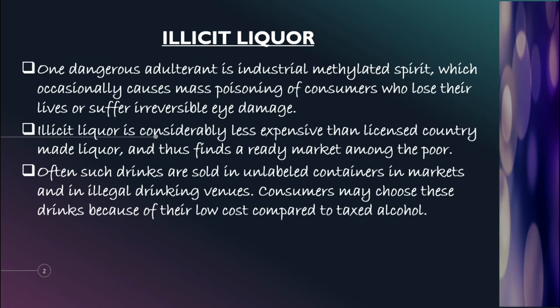Methanol is comparatively less expensive than ethanol, and hence the overall pricing of illicit liquor comes down. That is the reason why it finds a good market among poor people. Often such drinks are sold in unlabeled containers in markets and illegal drinking venues. Consumers choose these drinks because of their low cost compared to taxed alcohol, so illicit liquors are common among poor people in our country.